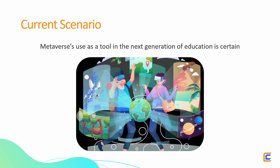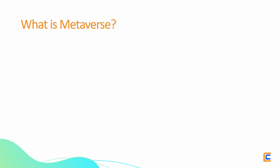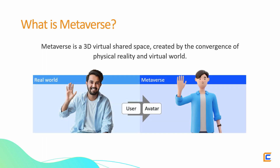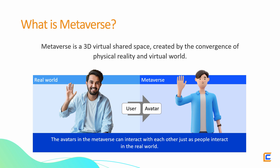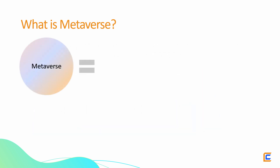The rise of the Metaverse as a tool in the next generation of education is certain. So let us first understand what the term Metaverse means. The Metaverse is a 3D virtual shared space created by the convergence of physical reality and virtual world, where users are represented as avatars. These avatars in the Metaverse can interact with each other just as people interact in the real world. In short, the Metaverse is the sum of virtual reality or VR, augmented reality or AR, and the Internet.